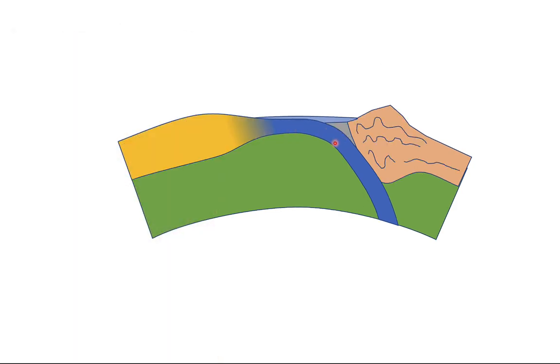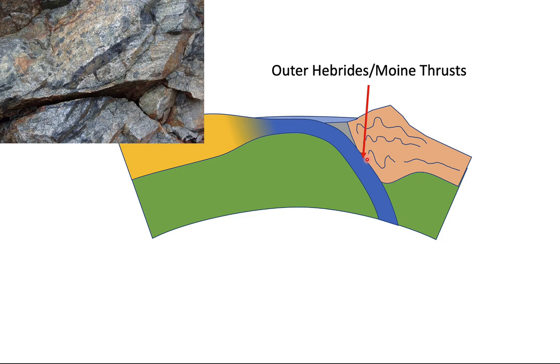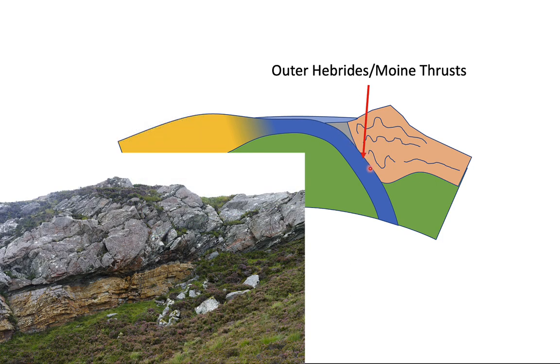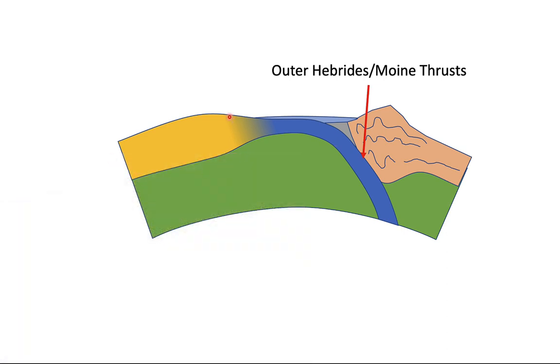If we let subduction continue a little bit further, we get continental crustal thickening and folding. We have a large, significant fault zone between the subducting ocean crust and the overriding continental plate. That's perhaps a good model for what we see in the Outer Hebrides: the Outer Hebrides fault zone and the Moyne thrust. Here's another bit of continental crust that's being dragged along by the subducting slab. Eventually, these two continents are going to collide, and we're going to end up with continent-continent collision.